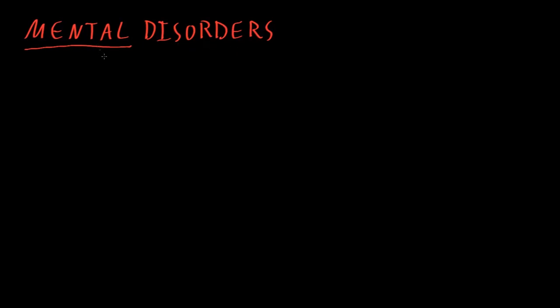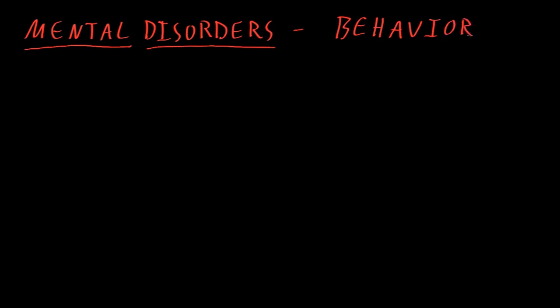Mental dysfunction affects the higher functions of the nervous system performed by the brain — functions that could be grouped into categories such as cognition, emotion, and consciousness. Mental disorders tend to come to the attention of other people by abnormalities of behavior, or sometimes when somebody is describing experiences that are obviously abnormalities of the mind.